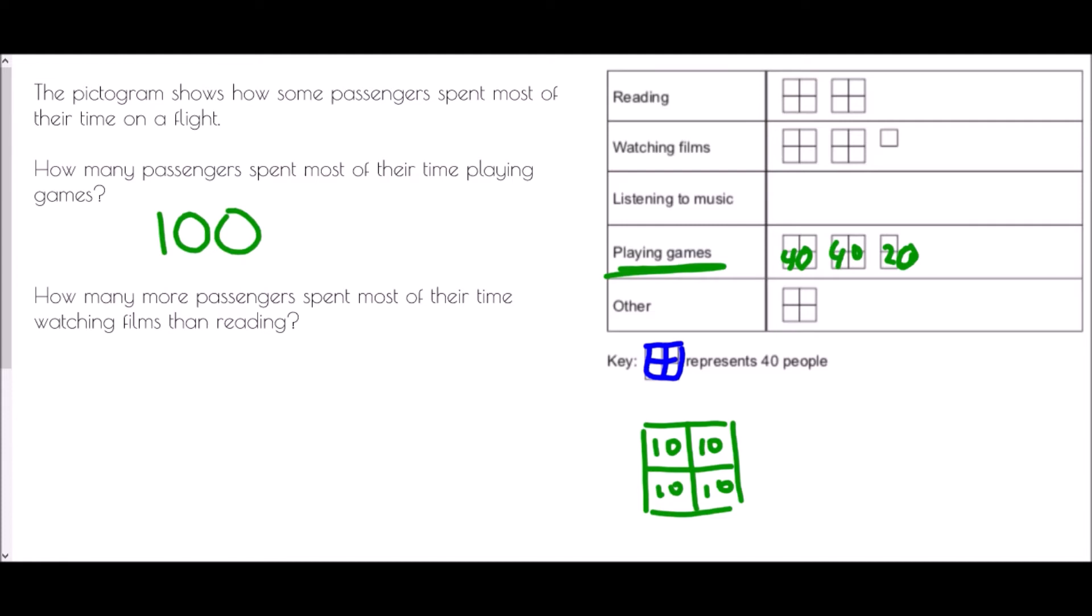We're then asked how many more passengers spent most of their time watching films than reading. So if we look at watching films, well that is two full diagrams and a small piece, and reading is two full diagrams. So the only difference between them is actually one little square. What does one little square mean? Well one little square was ten people, so there were ten people more.